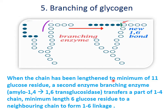Branching of glycogen now takes place at 1,6 bonds. When the chain has been lengthened to a minimum of 11 to 12 glucose residues, a second enzyme called the branching enzyme — also known as amylo-1,4 to 1,6 transglucosidase — acts. This enzyme transfers a segment of the 1,4 chain (minimum length of 6 glucose residues) to a neighboring chain to form a 1,6 linkage, creating a branch point.